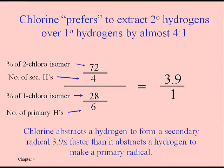So we get more of the secondary chloro product compared to a corresponding primary product. That helps us plan ahead. It tells us if we want to make 1-chlorobutane, we're not going to make very much of it — not if there's a possibility of the 2-chloro isomer forming.